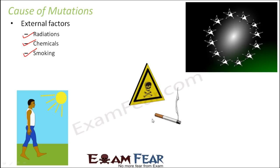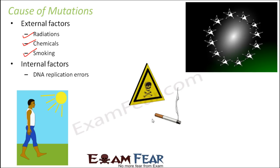That is why it is written on cigarette packs that smoking is injurious to health. When you smoke, certain chemicals present in cigarettes alter the structure of your genes and chromosomes. This change in genetic material can lead to unwanted uncontrolled growth of cells in the body, which can lead to cancer. Similarly, certain radiations such as ultraviolet radiation or X-rays are extremely harmful and can be a cause of mutations.